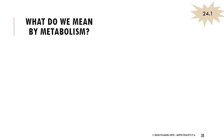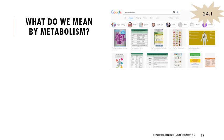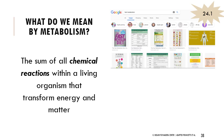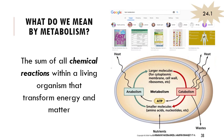When thinking about metabolism, people often have misconceptions from everyday usage. In biology, metabolism is the sum of all chemical reactions within a living organism that transform energy and matter. It involves cycling between anabolism and catabolism — building things up and breaking them down, releasing heat and other waste products while taking in nutrients to continue the cycle.